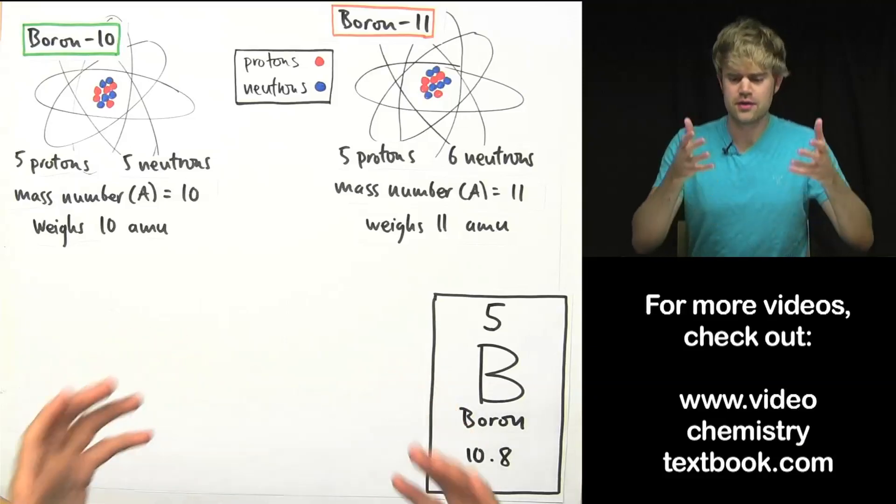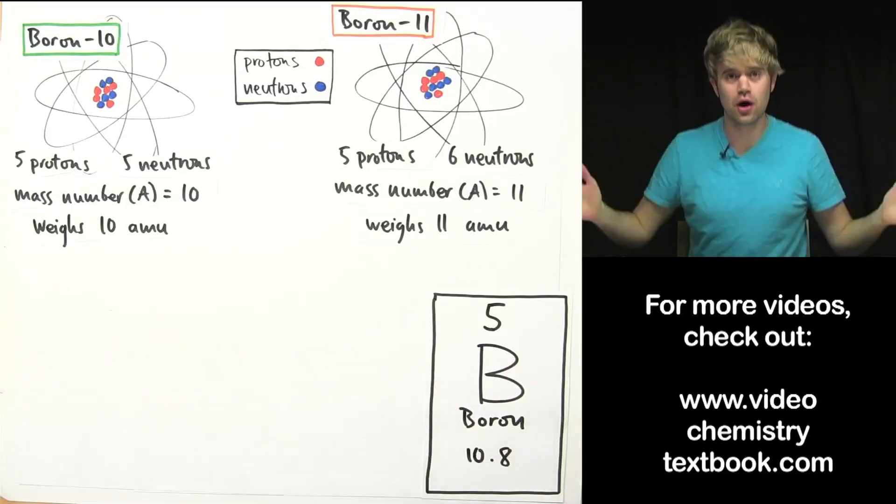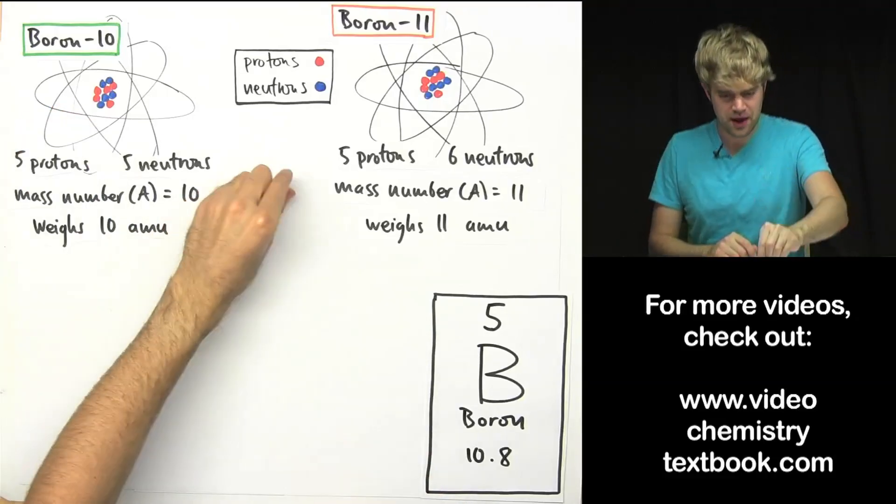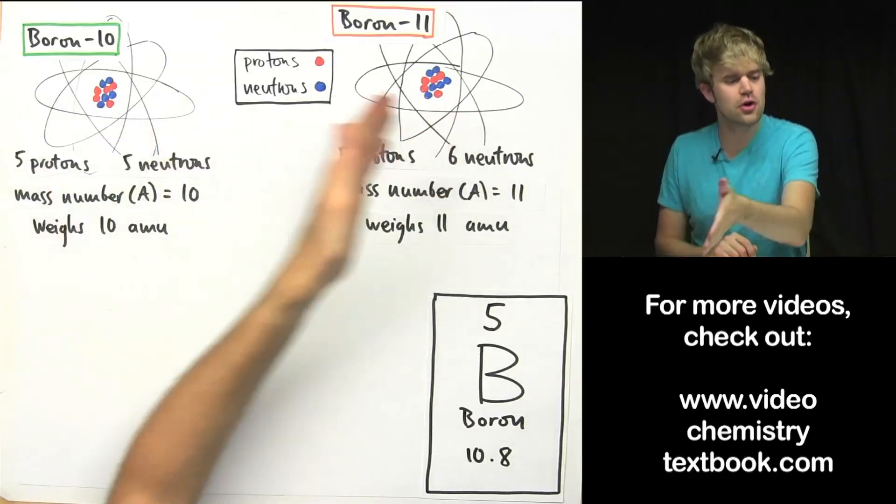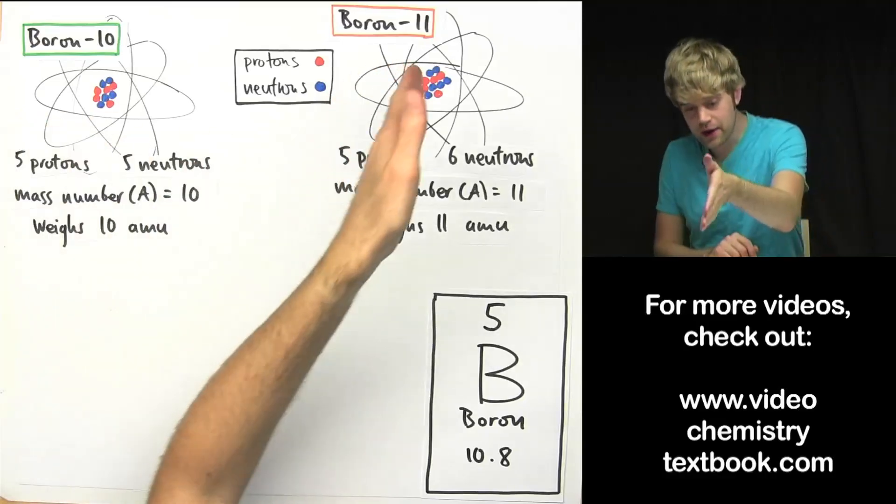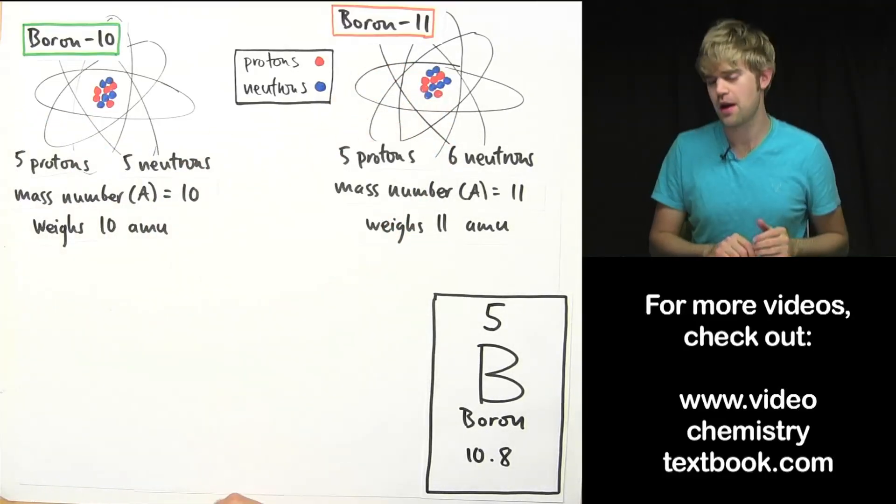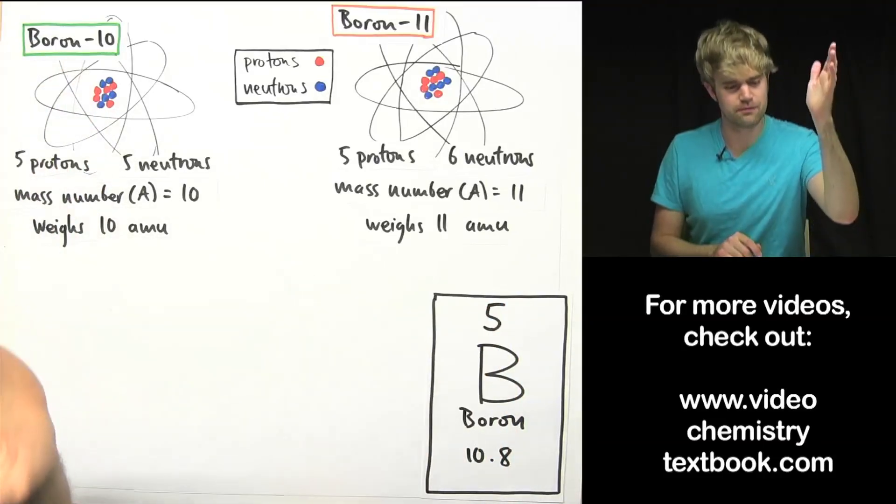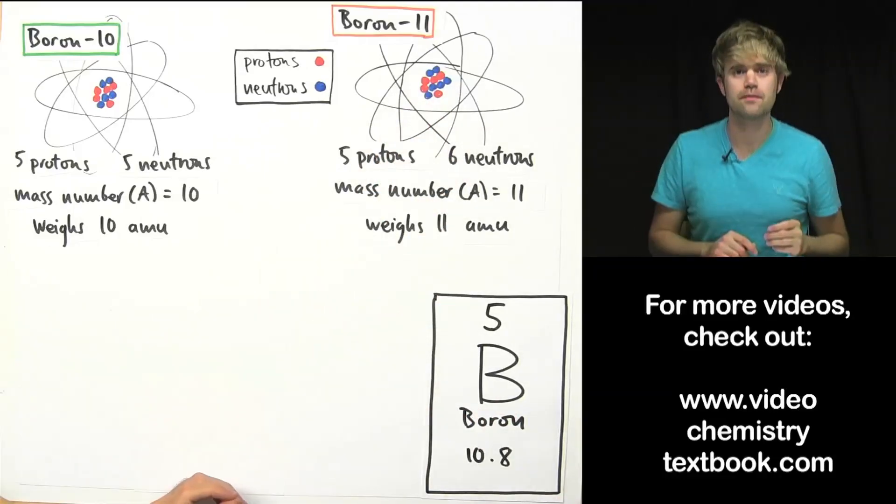Now there are billions and trillions and gazillions of boron atoms in the world and if you picked out one boron atom it could be either of these two versions. It could be either a boron-10 atom with 5 neutrons or it could be a boron-11 atom with 6 neutrons. But here's the thing, there's not the same number of boron-10 and boron-11 atoms in the world.